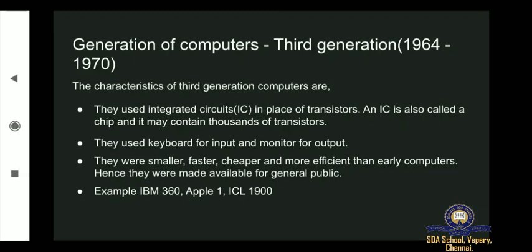In the third generation, everybody — every person — started using computers because it was smaller, faster, cheaper, and more efficient than early computers. In the first and second generation, computers were large, not very fast, and costly, so people were not able to use them. But in the third generation, the size was smaller, speed was faster, and the cost was affordable for everyone. Examples include IBM 360, Apple 1, and ICL 1900.